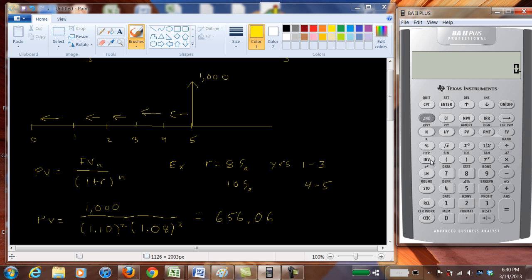Had we used 10 percent for all five periods, we would have gotten too low a number. In fact, we can do that. We can use our cash flow time value of money function keys here, so we could have done it that way.